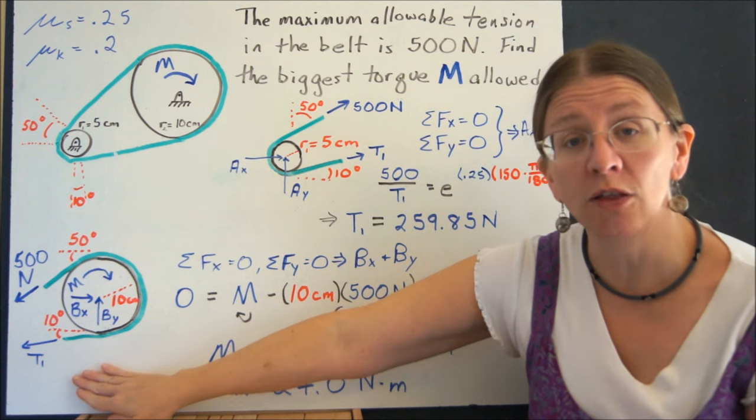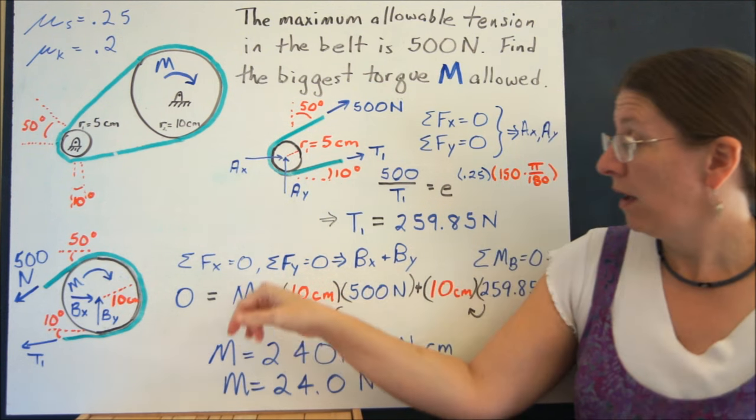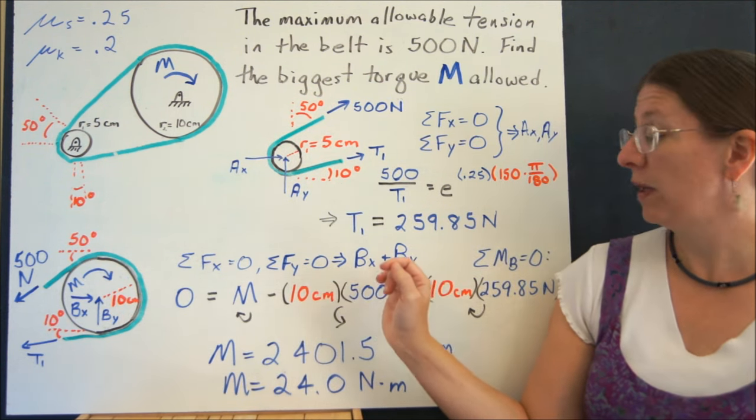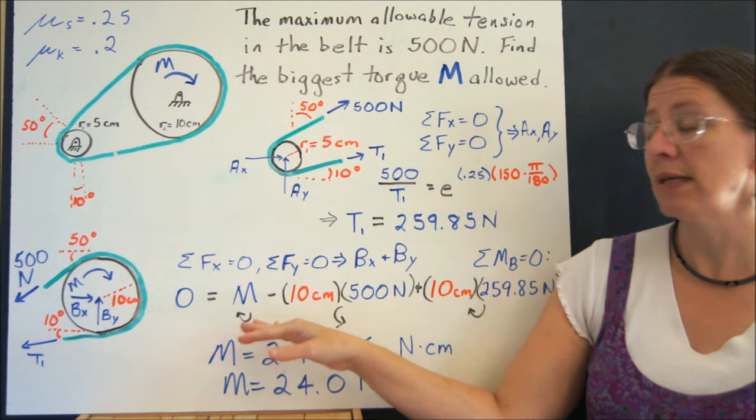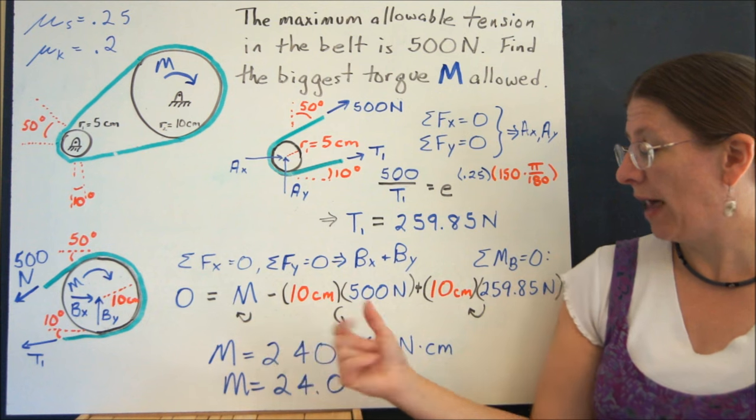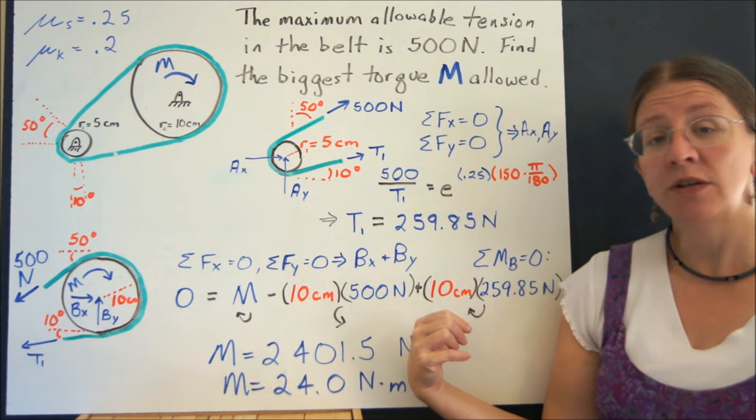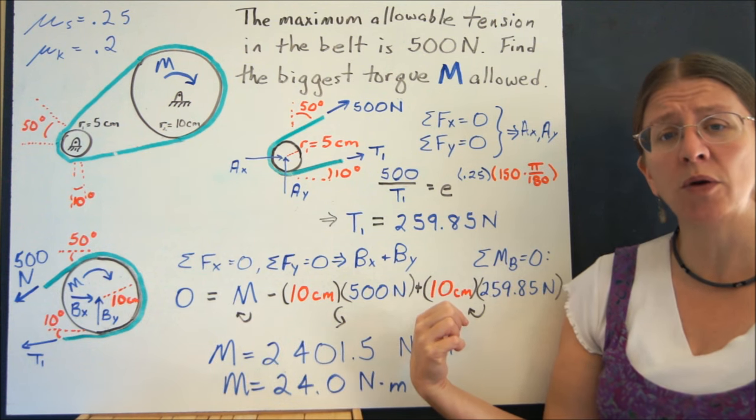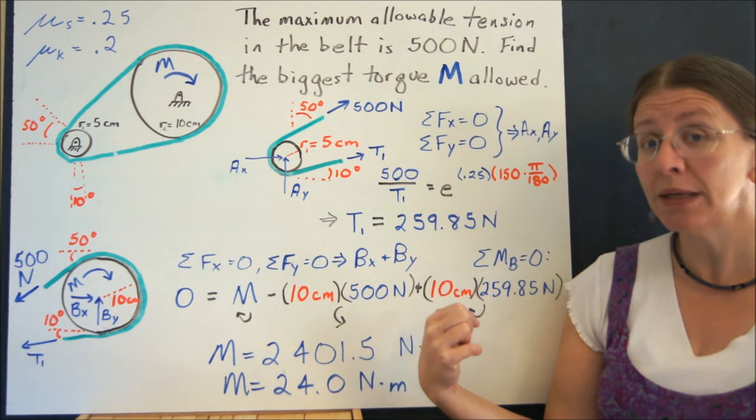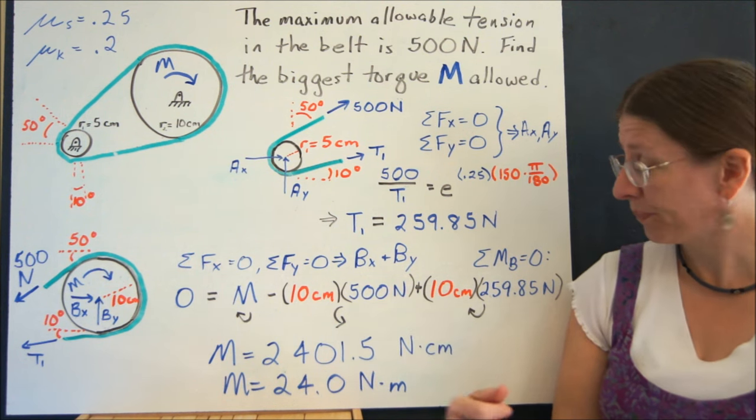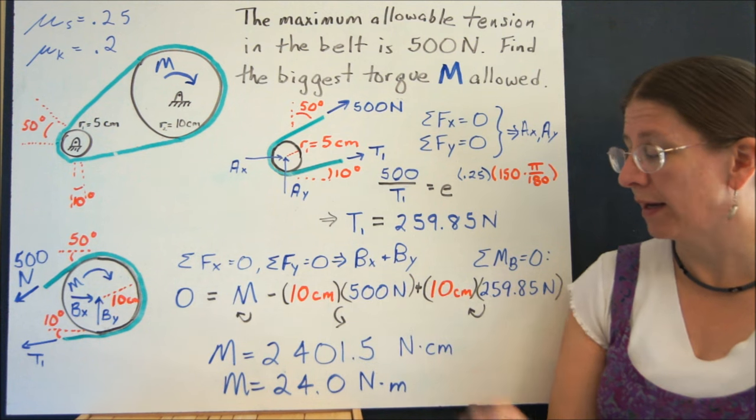Look at the free body diagram of the larger pulley. Sum of the forces in X and Y would give me the pin at the middle, but I don't care. So if I'm looking at this, I can take the sum of the moments, and I have M and the two tensions. The two tensions I don't even have to resolve into component form because they're acting tangent to the circle. So the perpendicular distance is just going to be 10, and I can plug that in and I get a value.